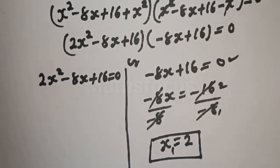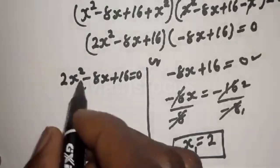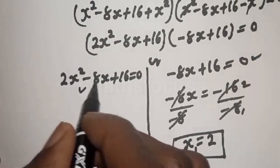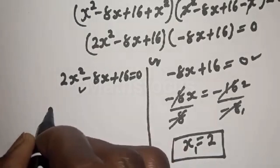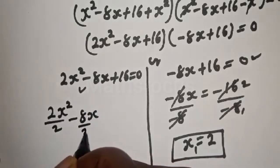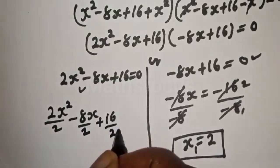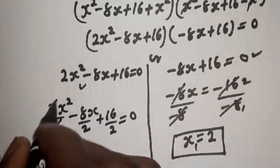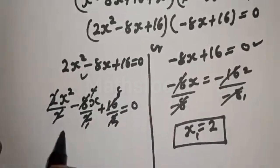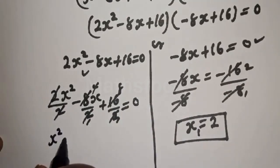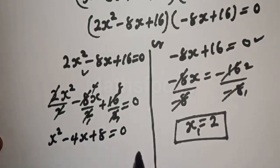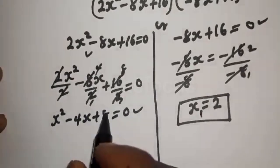We call this x₁ equals 2. From the first case, let us divide all through by 2: 2x squared over 2, minus 8x over 2, plus 16 over 2, equals zero. This simplifies to x squared minus 4x plus 8 equals zero. This is a quadratic equation we will solve using the quadratic formula.